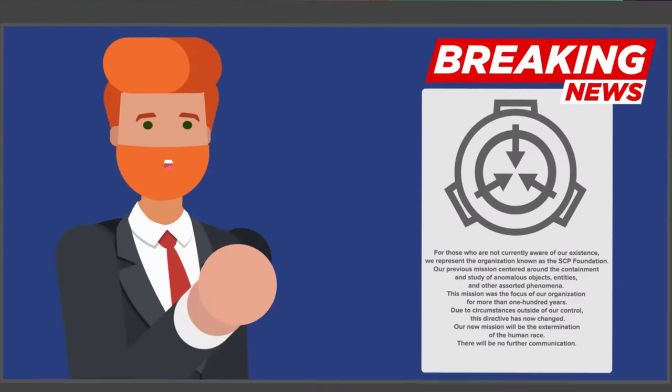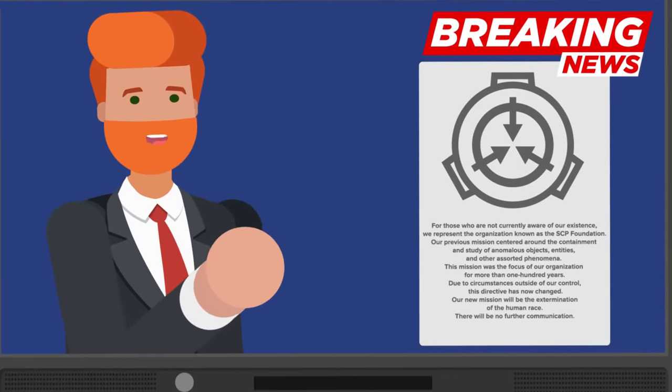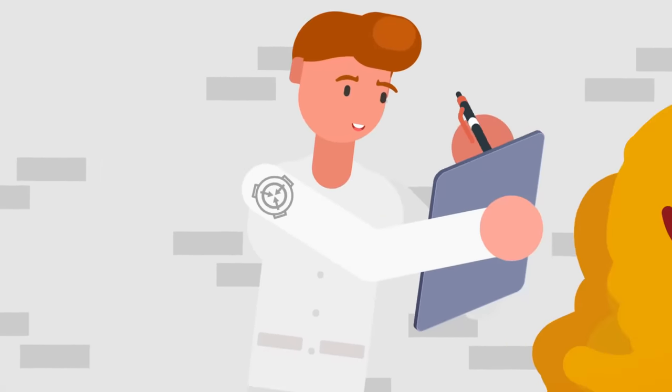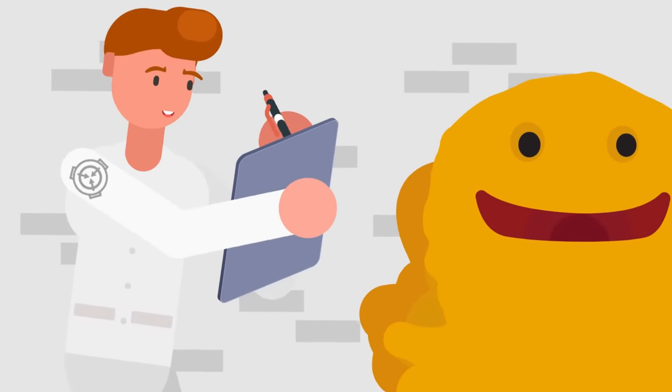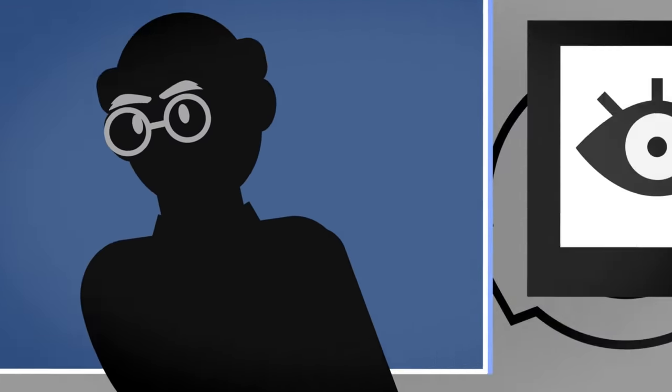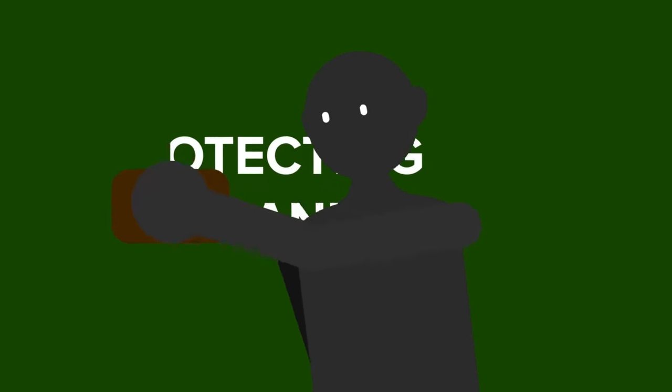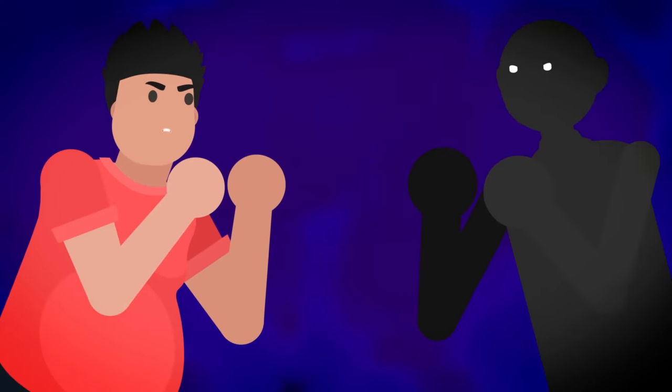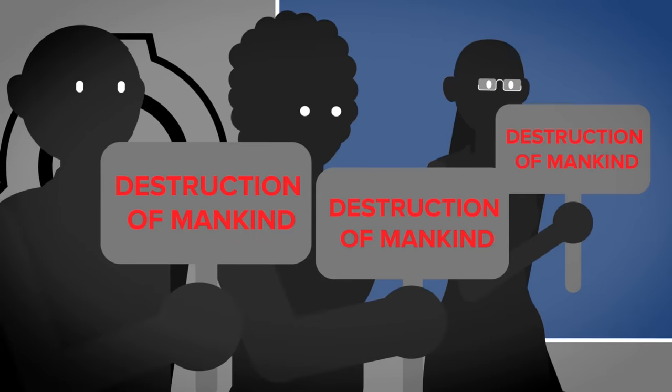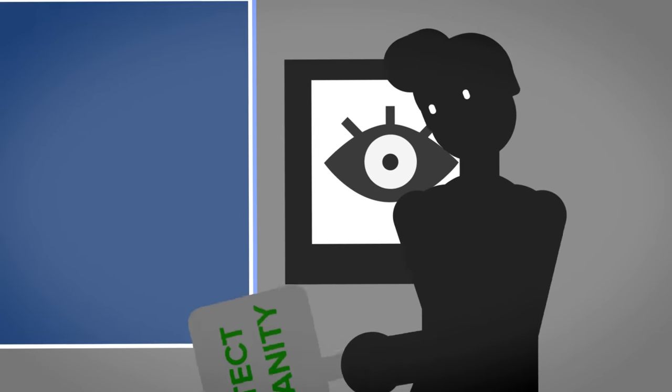'For those who are not currently aware of our existence, we represent the organization known as the SCP Foundation. Our previous mission centered around the containment and study of anomalous objects, entities, and other assorted phenomena. This mission was the focus of our organization for more than one hundred years. Due to circumstances outside of our control, this directive has now changed. Our new mission will be the extermination of the human race. There will be no further communication.' He couldn't believe what he was seeing. The SCP Foundation had declared war on the human race. How could this be? What had led to the O5 Council changing their entire mission from protecting humanity to ending it? Could it be possible that a powerful SCP had taken control or influenced the Council's decision?